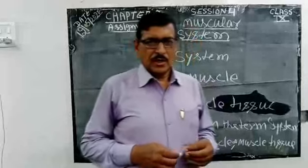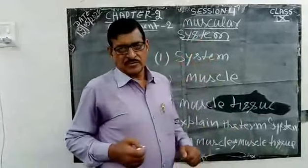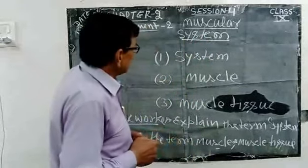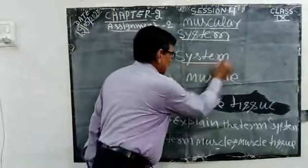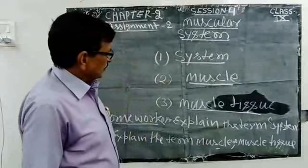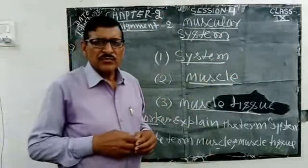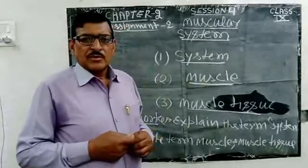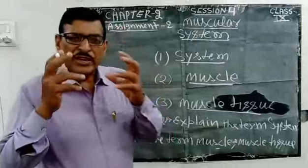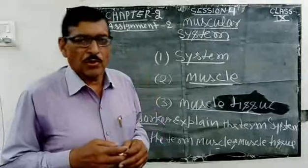Good morning, all of you. Now, children, I am going to start the chapter on the muscular system. For better understanding of the muscular system, we must know about the system, muscles, and muscle tissue. First, we will see about the system. System is a group of different types of organs which carry out the essential or specific function of the body.